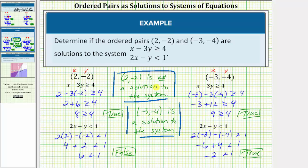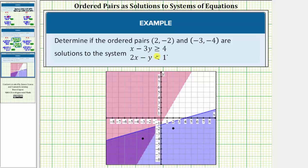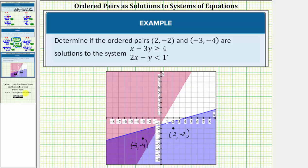Let's verify these results graphically. The solution to the system of inequalities is the double shaded region. Notice how the point (-3, -4) is in the double shaded region, confirming it is a solution to the system. The point (2, -2) is not in the double shaded region and therefore is not a solution to the system.